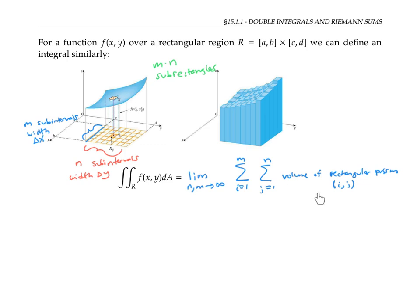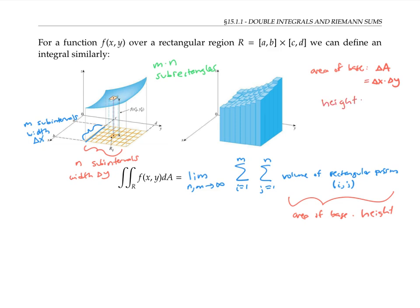The volume of one of these little rectangular prisms is going to be the area of its base times its height. The area of the base is the area of the little sub-rectangle — sometimes we call that delta A — and we can alternatively write it as delta x times delta y, since delta x is the width in the x direction and delta y is the width in the y direction. The height is given by f evaluated at a sample point.